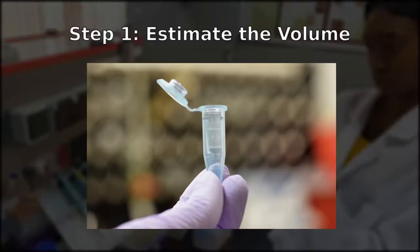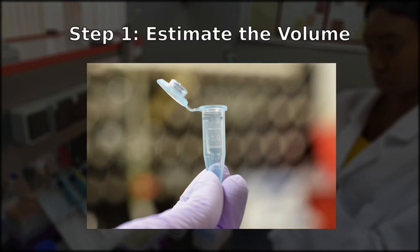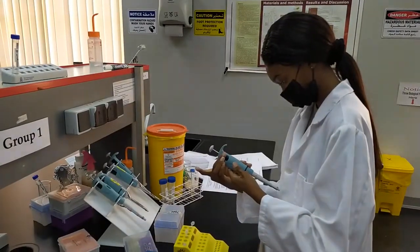All you need is a micropipetter and about a minute of your time. As you can see, epitubes tend to have markings for volumes on their sides. While these will not give you a super accurate reading, they will give you a rough idea of how much liquid might actually be inside.